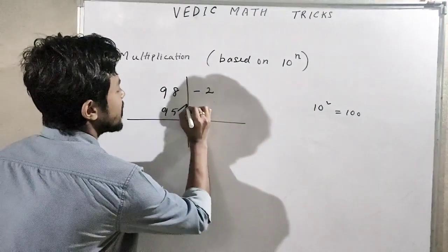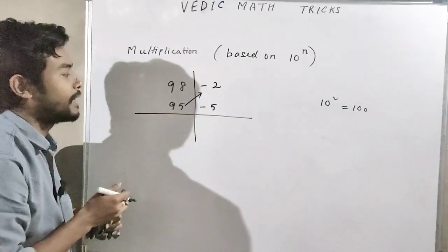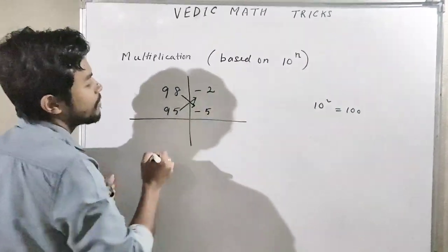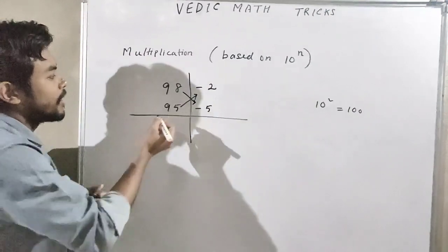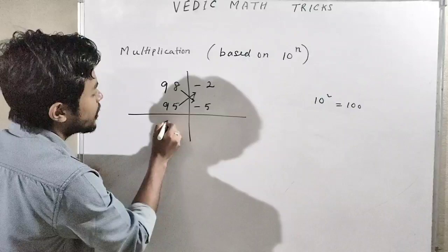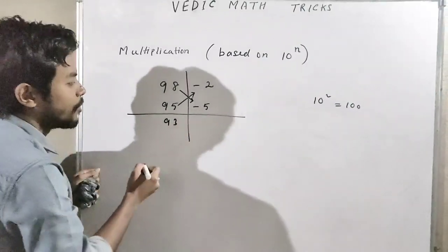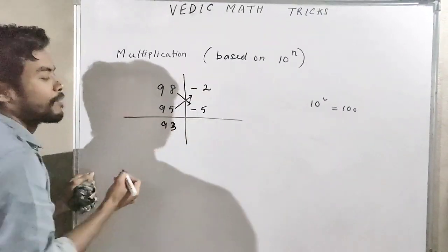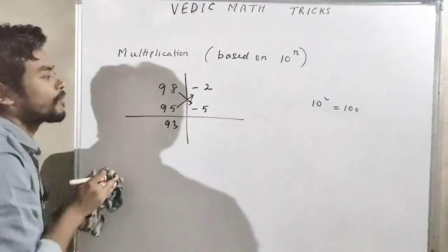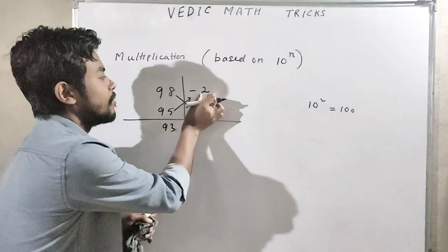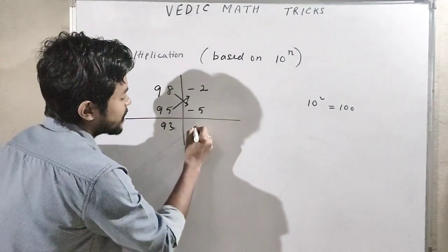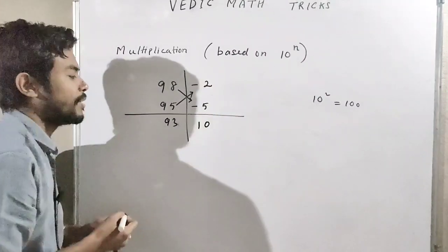Now 95 minus 2, what will you get? 93. Or 98 minus 5, what will you get? We will get 93. So here we write 93. Now minus 5 times minus 2, what will you get? Minus 10, which is minus minus plus 10.